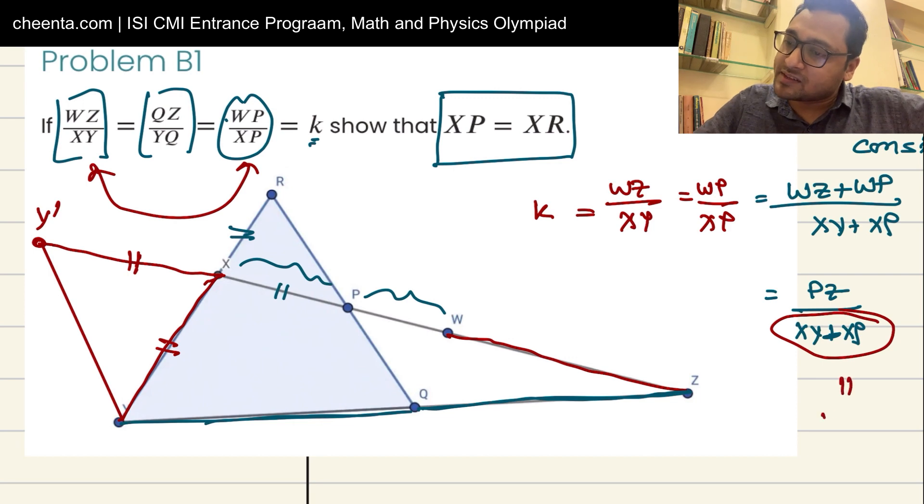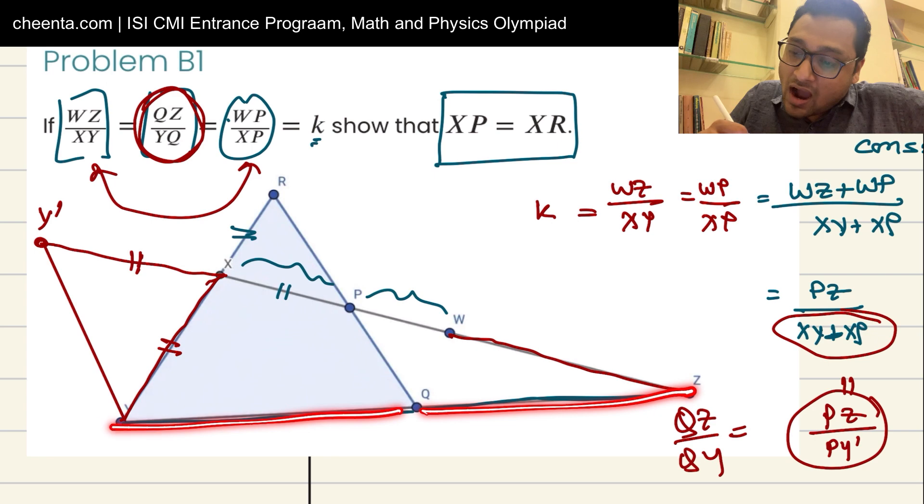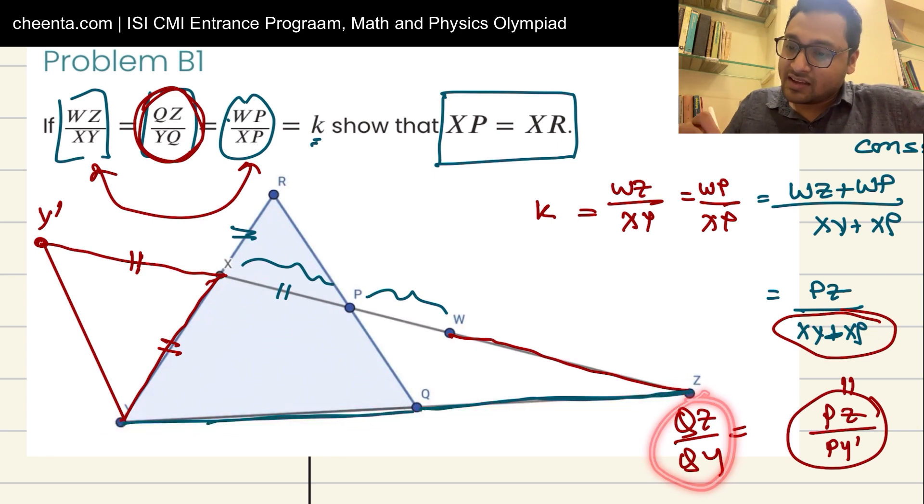Okay. So now this is equal to PZ by PY prime. And remember that all of this is equal to QZ by YQ, QZ by QY. Okay. Now this looks really good. QZ by QY, that's this one, is equal to PZ by PY prime.